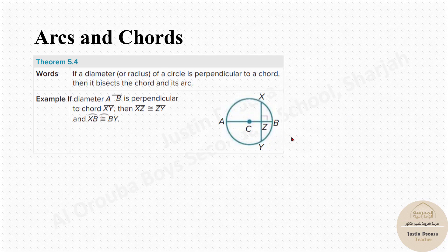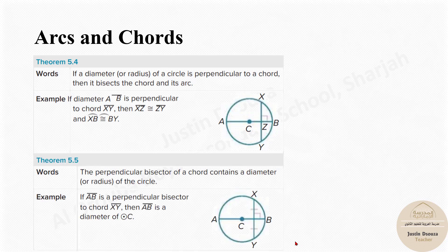The second theorem: if AB is the diameter and it is perpendicular to a chord — making 90 degrees — then it bisects that chord, so XZ and ZY will be equal. The arcs are also bisected, meaning arc XB and arc BY are equal. The next theorem says that if AB is a perpendicular bisector to chord XY, cutting it into two equal halves, then AB must be a diameter.